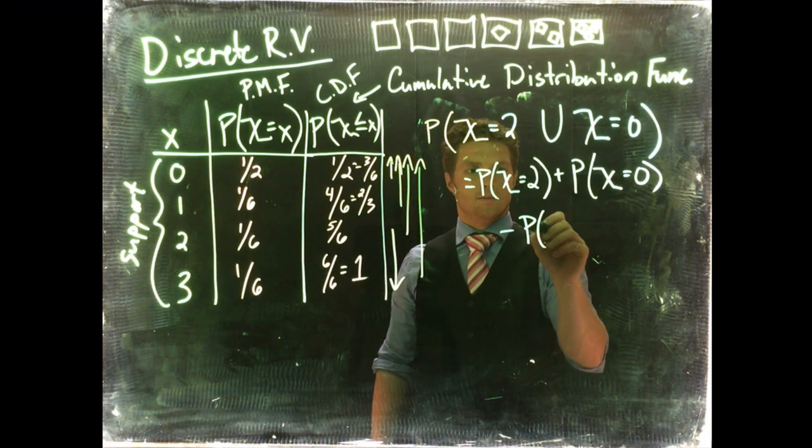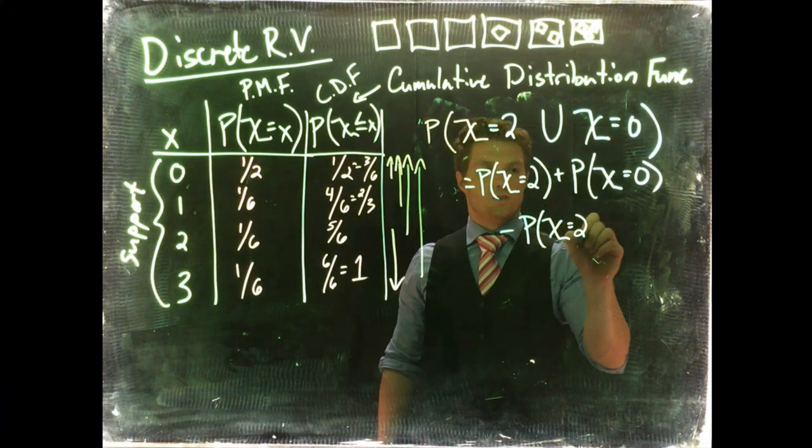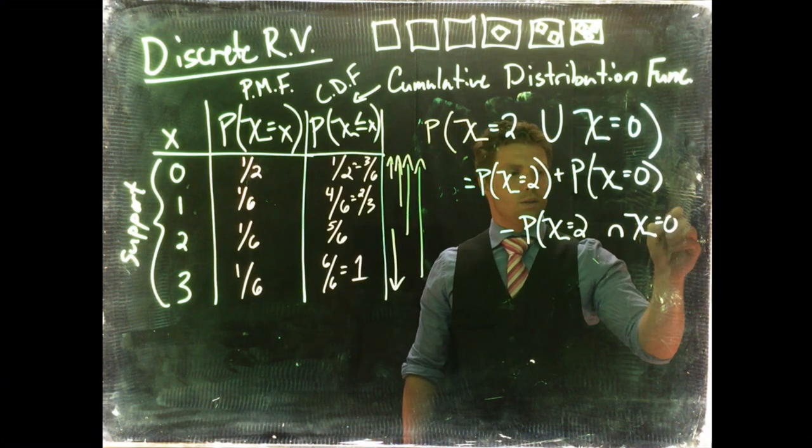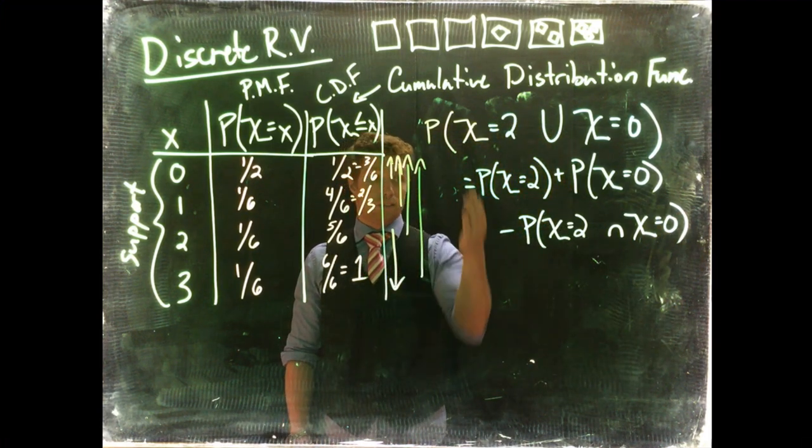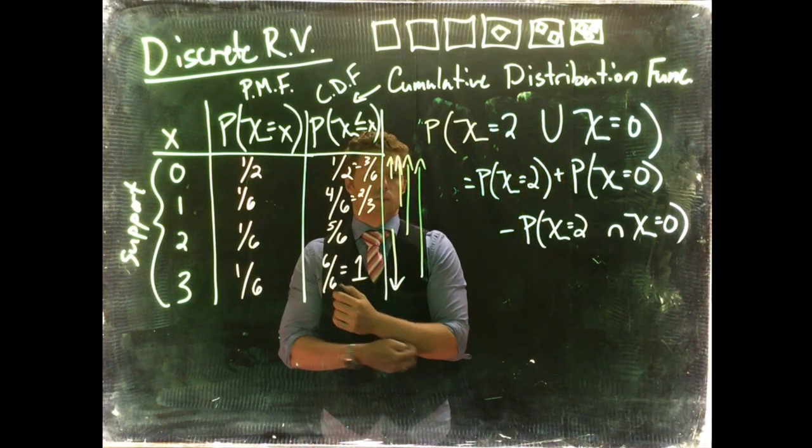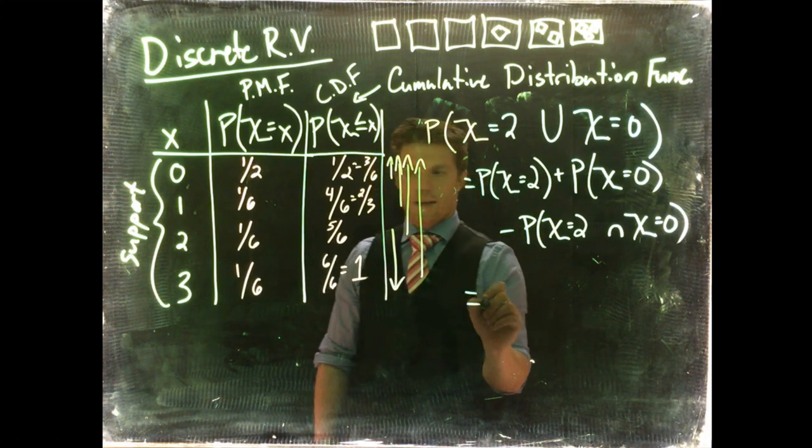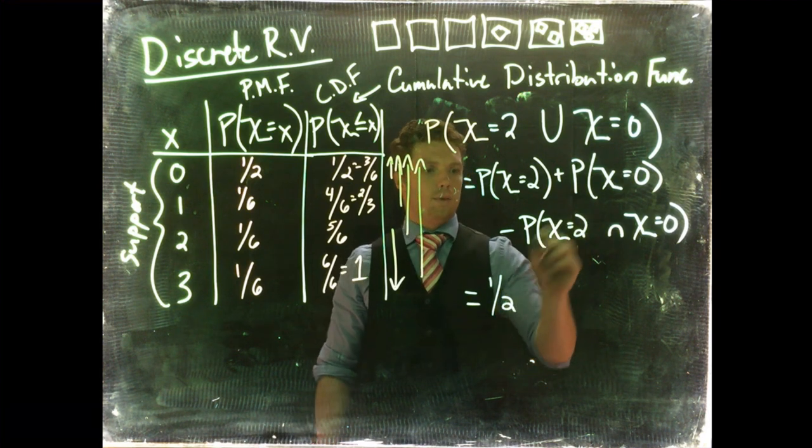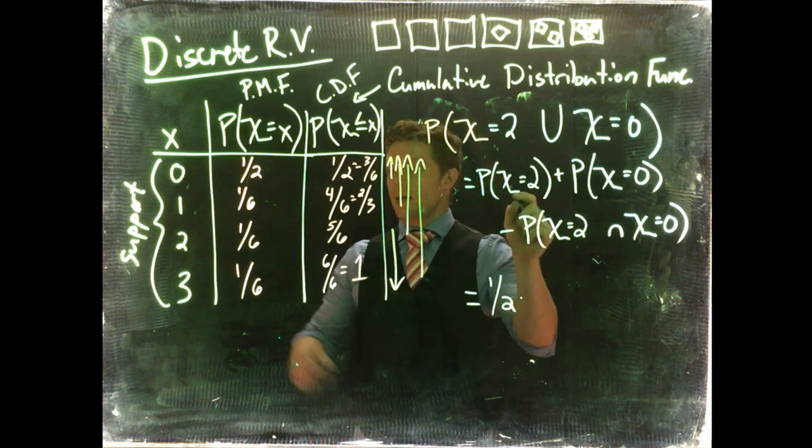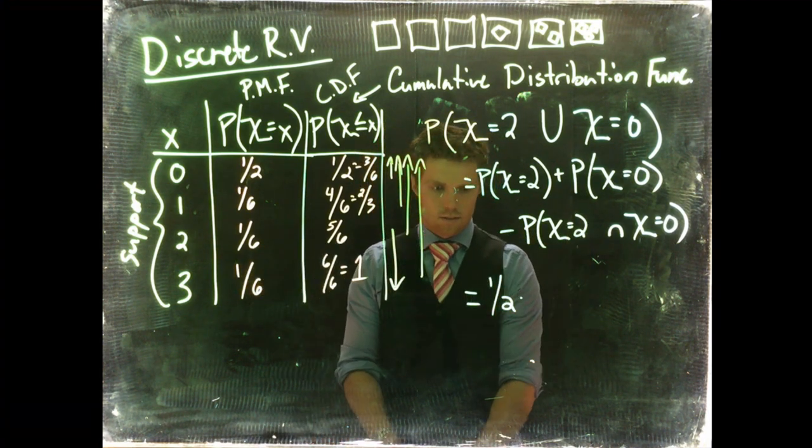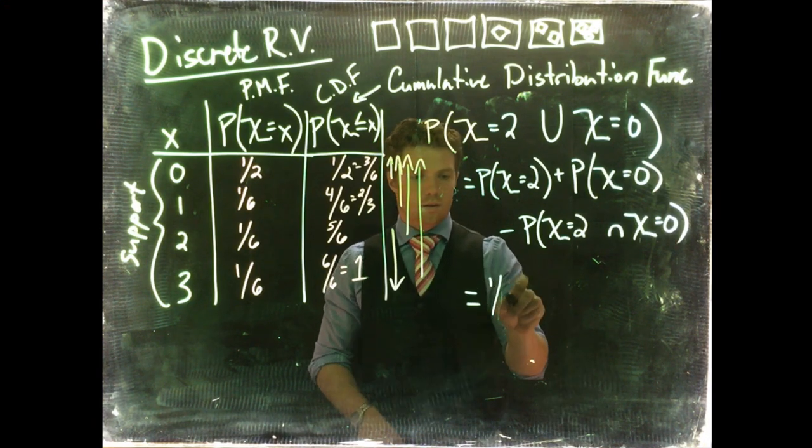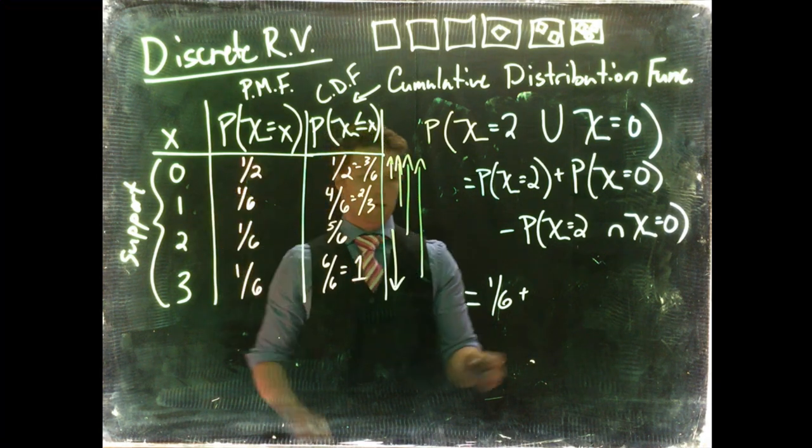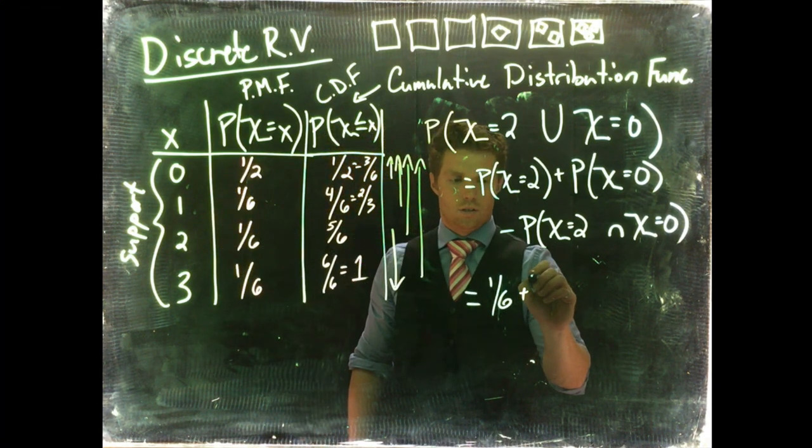All right, so we've done this set up before. We just need to look at it. Okay, so the probability of X equaling 2 is equal to 1 sixth. Pull that from our PMF. Probability of X equaling, oh, sorry. X equaling 2 is 1 sixth. Excuse me, I got ahead of myself. 1 sixth plus probability of it being 0 is 1 half, or I'll put 3 sixths, minus...